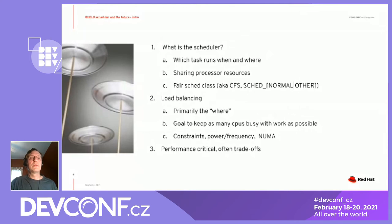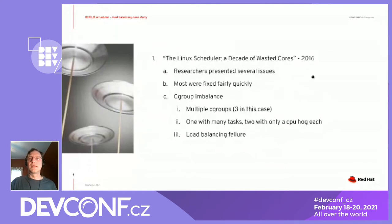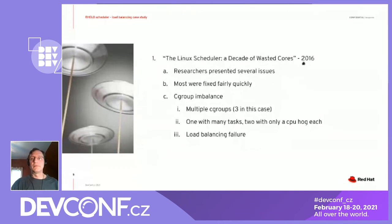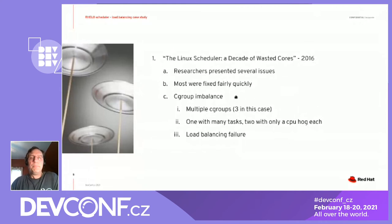The issue I'm talking about comes from a paper called 'The Decade of Wasted Cores,' published about four to five years ago by several researchers in France and Canada — I have a link to the paper later in the deck. They studied the Linux scheduler and found basically four issues in the current implementation. Three were fairly straightforward and went into the upstream kernel around the time the paper came out, but there was this other issue that ended up being called cgroup imbalance.